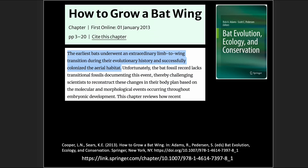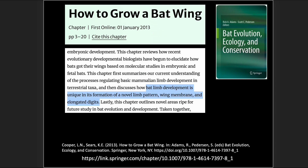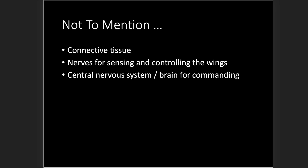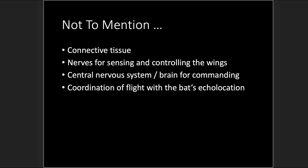Let's look at one paper: 'How to Grow a Batwing' from 2013. It states: 'The earliest bats underwent an extraordinary limb-to-wing transition during their evolutionary history and successfully colonized the aerial habitat. Unfortunately, the bat fossil record lacks transitional fossils documenting this event.' Bat limb development is unique in its formation of a novel limb pattern, wing membrane, and elongated digits — not to mention connective tissue, nerves for sensing and controlling the wings, a central nervous system and brain for commanding flight, and coordination with echolocation capabilities that microbats have.